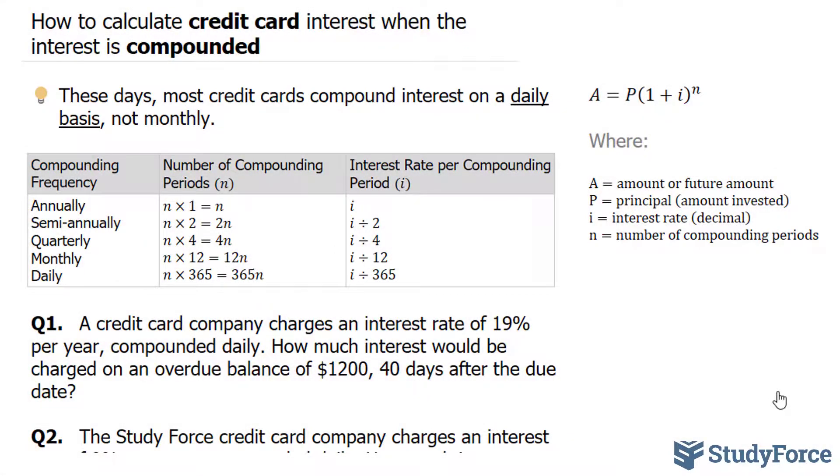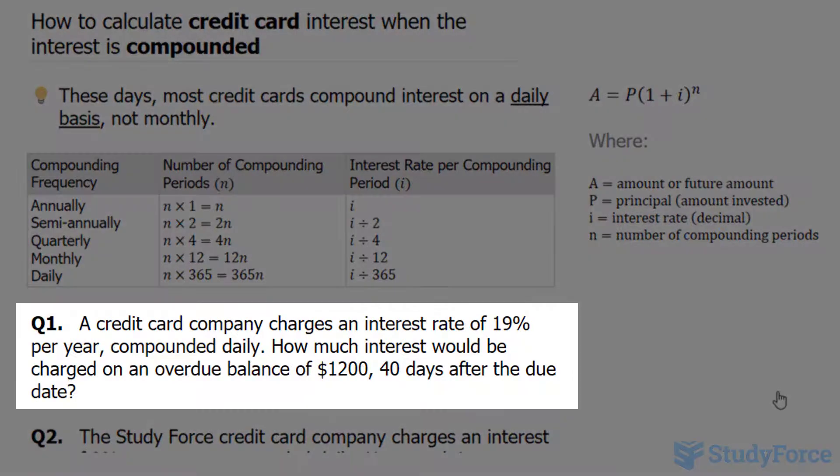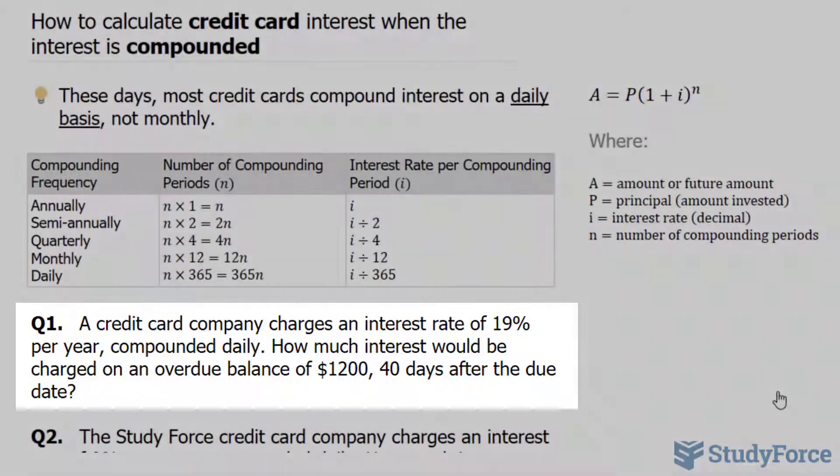Starting with our first example, a credit card company charges an interest rate of 19% per year compounded daily. How much interest would be charged on an overdue balance of $1,200 40 days after the due date?